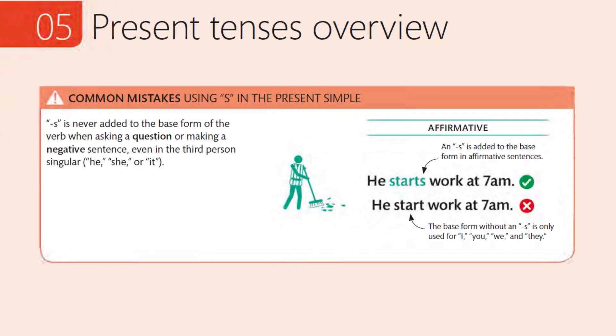Common Mistakes: Using S in the present simple. S is never added to the base form of the verb when asking a question or making a negative sentence, even in the third person singular: he, she, or it. He starts work at 7 a.m. An S is added to the base form in affirmative sentences.